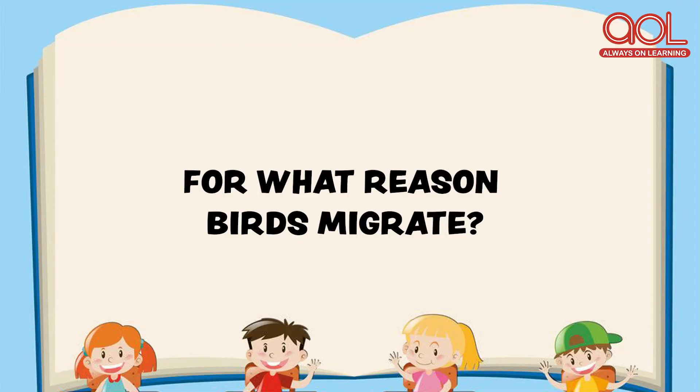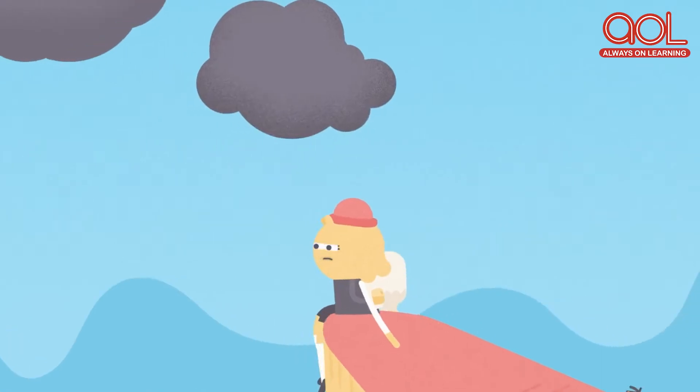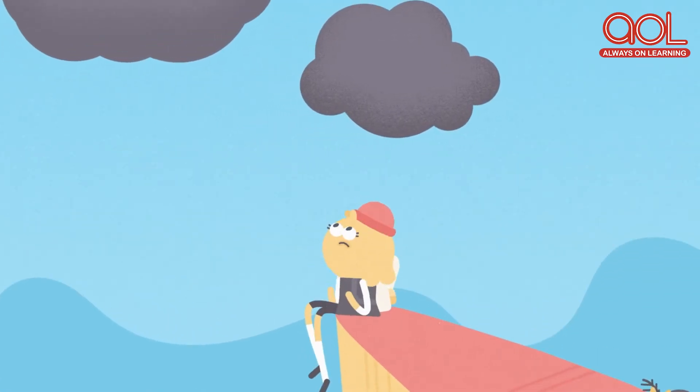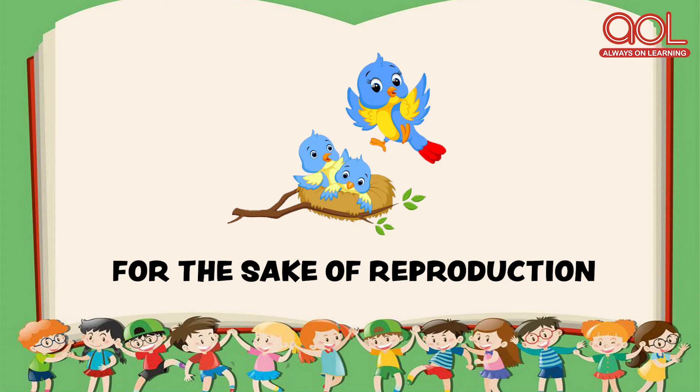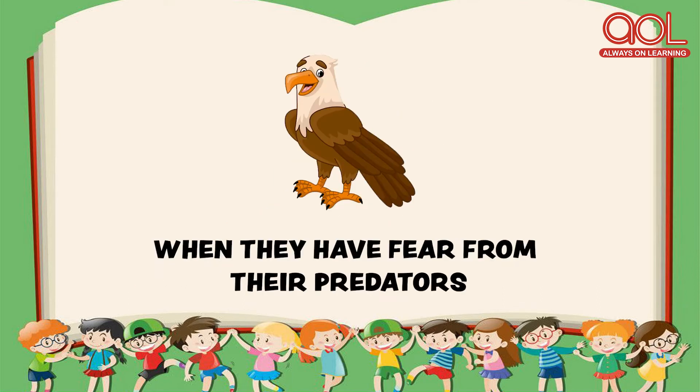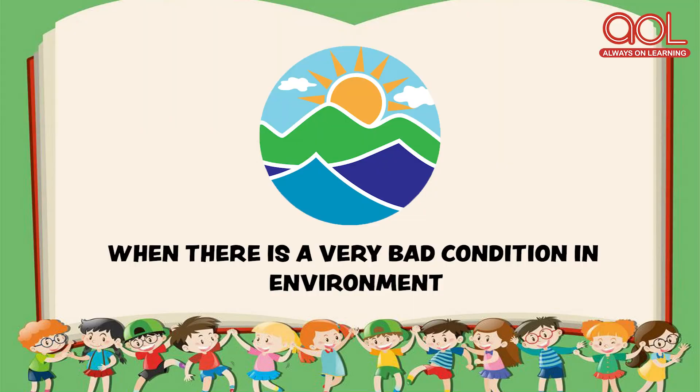For what reasons do these birds migrate? A very basic and common reason in all birds is due to seasonal change or climatical conditions. When there is a change in climate, the birds migrate. Apart from that, for the sake of reproduction, when there is a shortage of food, when they have fear from their predators, and also when there is a very bad condition in the environment, the birds travel. And mostly this is happening nowadays, where birds travel due to bad environmental conditions.